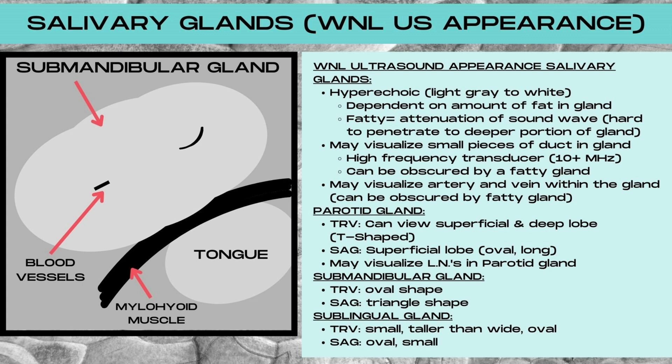The submandibular gland in the transverse view is oval in shape, and in the sagittal plane tends to be slightly triangular shaped. The sublingual glands are small on ultrasound, and in the transverse plane they will be an oval shape turned on its side, making it taller than wide. In the sagittal plane they'll appear oval, small, and wider than tall.